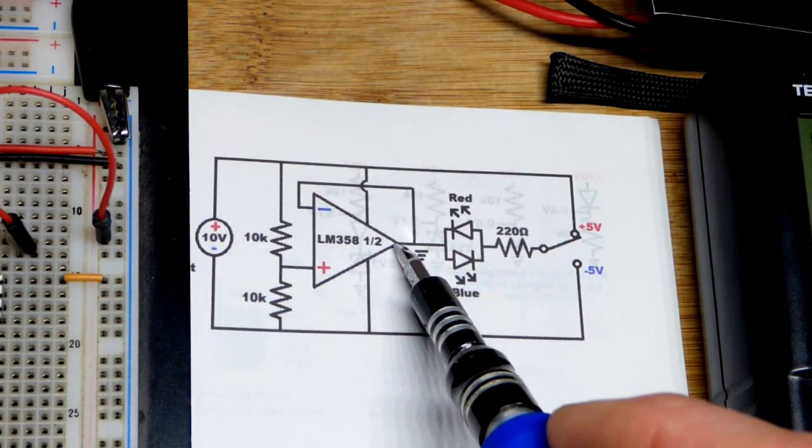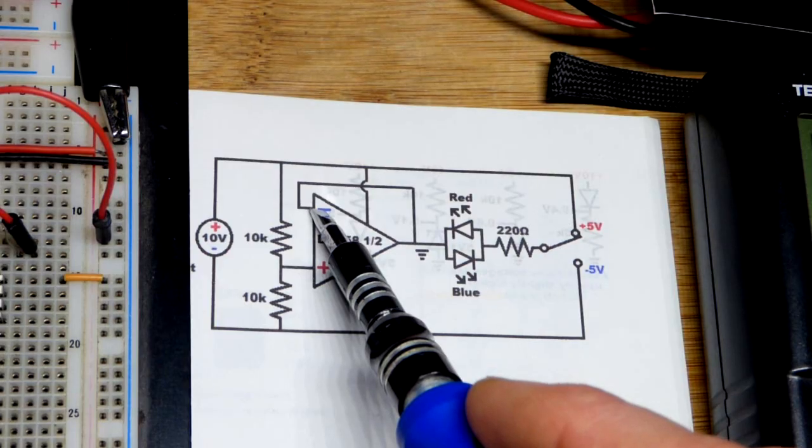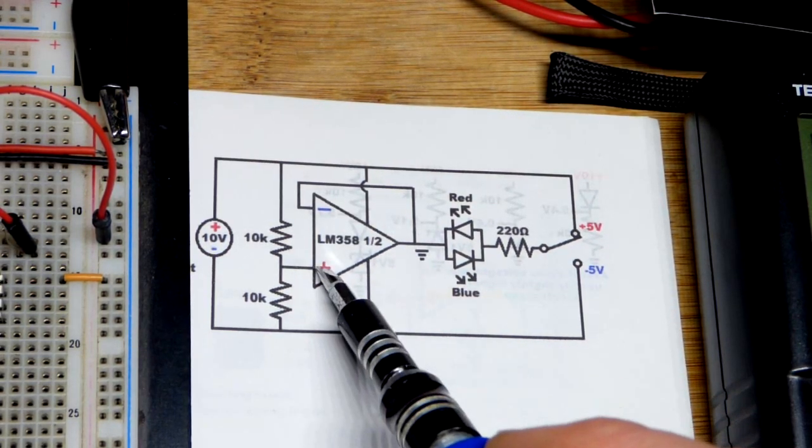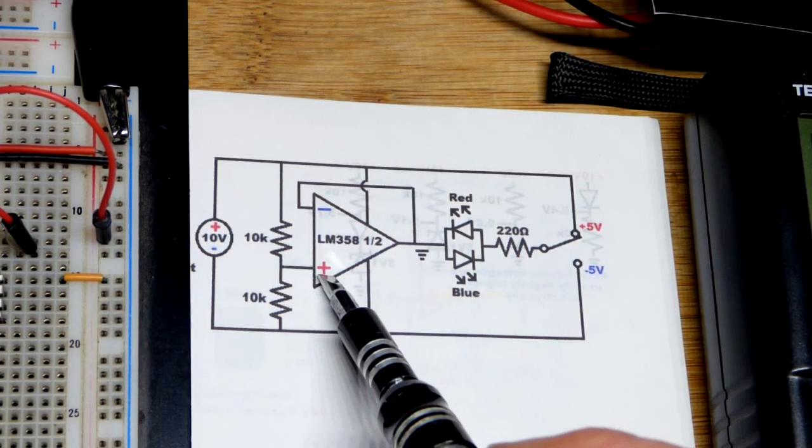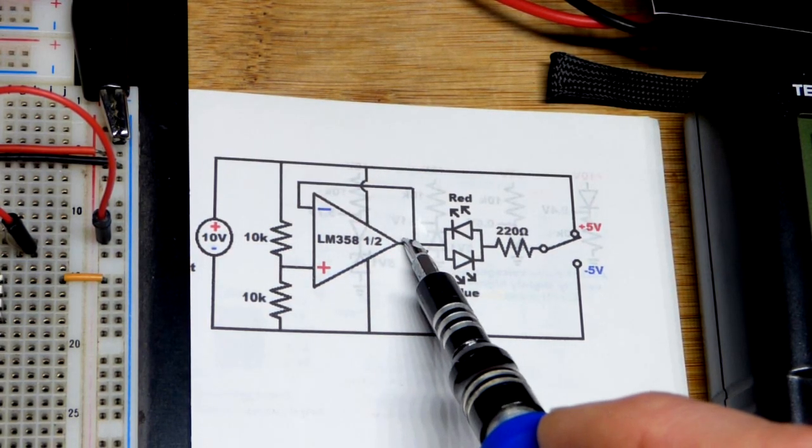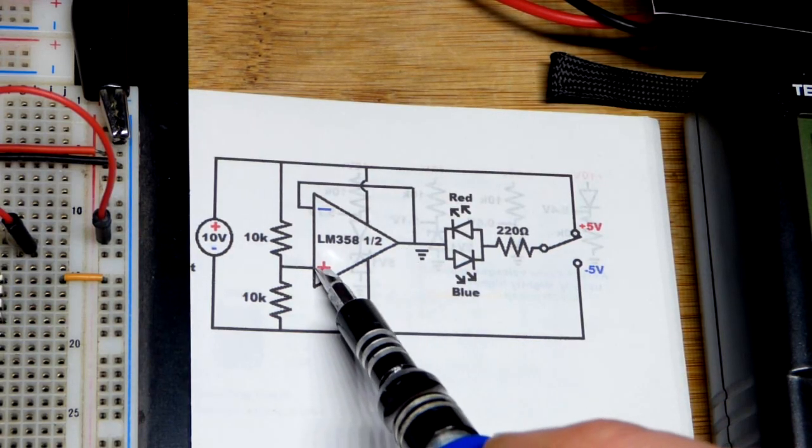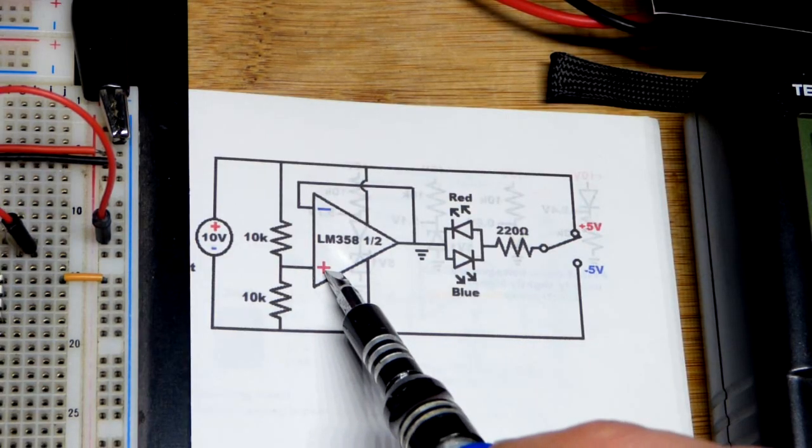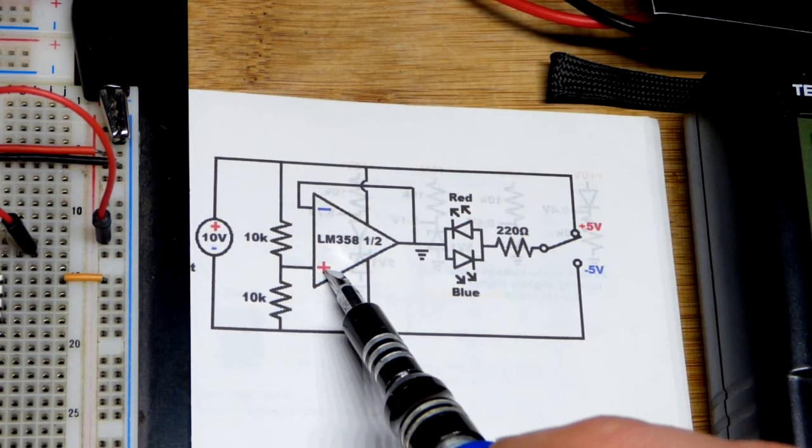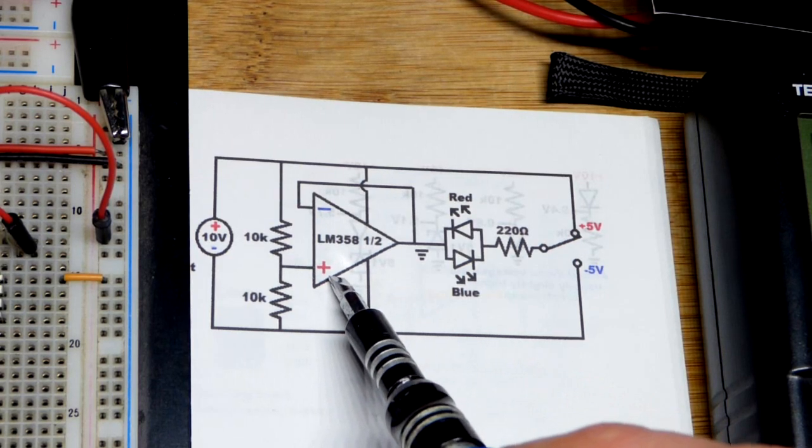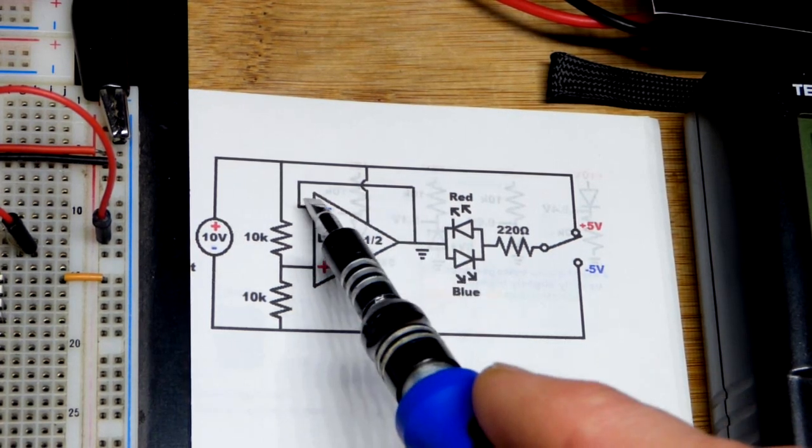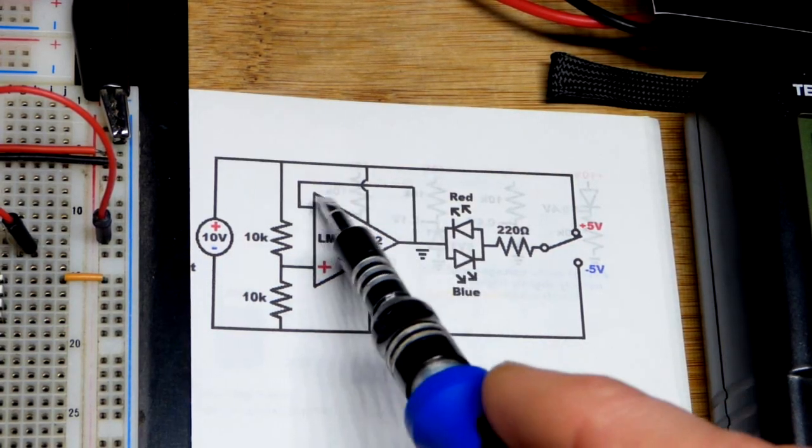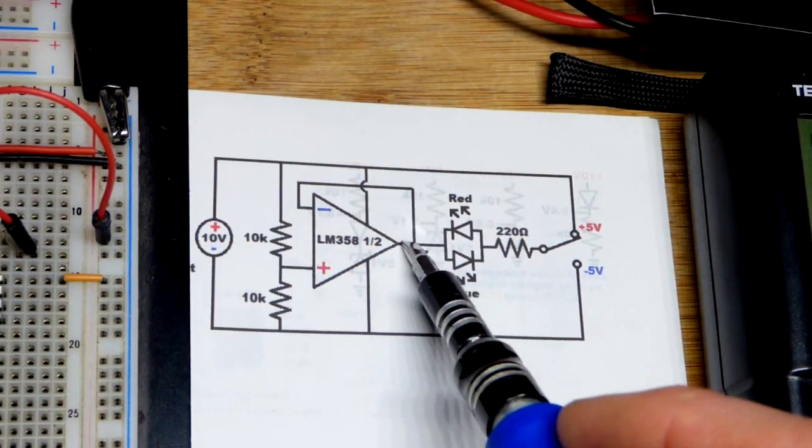When you have the output connected to the inverting input, the op-amp does whatever it can to make that voltage exactly the same as the non-inverting input. The output will go up if the non-inverting input voltage is higher than the inverting, and it will go down if the non-inverting input voltage is lower than the inverting voltage. But when those voltages line up, the output locks in place. The way to do that is to give the exact same voltage.